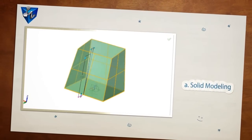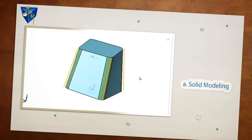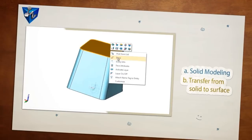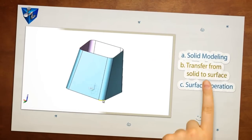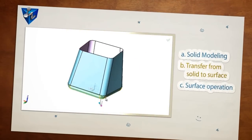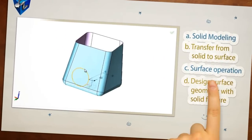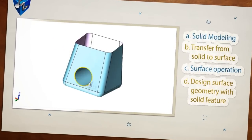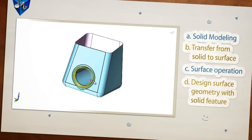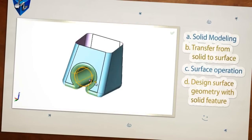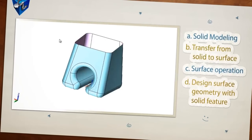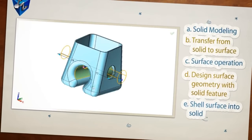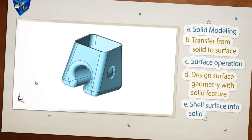Let's see an example. Closed geometry is solid. If a surface is erased, it becomes open geometry — a surface. Solid features can work directly on surface parts. Shell a surface to get a solid model.